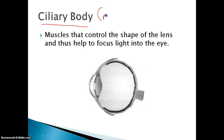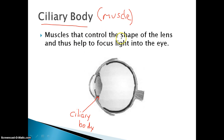Next we have the ciliary body — that's a type of muscle attached to the lens. These muscles control the shape of the lens and thus help to focus light. You can actually use these muscles pretty easily: hold your finger close to your face and look at it, then look past your finger at the wall behind it. Your finger will go out of focus and the wall will come into focus. When you do that, you are changing the shape of the lens by fractions of a millimeter, which is enough to make the lens focus light in a different way.